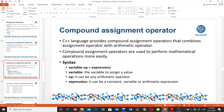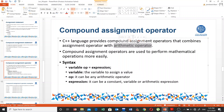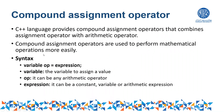Now let's work on the compound assignment operator, which is used just for saving time. C++ provides compound assignment operators that combine the assignment operator with an arithmetic operator. We know what arithmetic operators are — plus, minus, and so on — and we also know the assignment operator. The compound assignment operator combines both, and these are used to perform mathematical operations more easily.